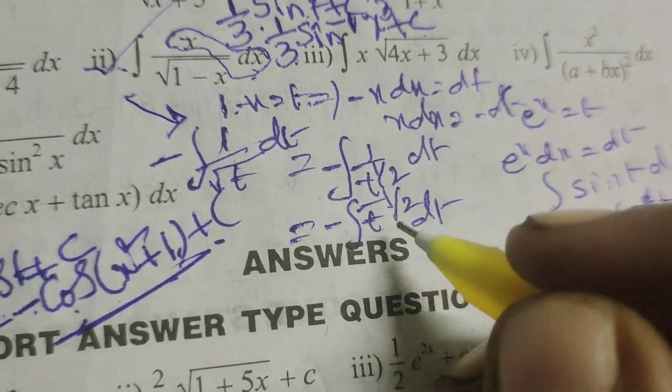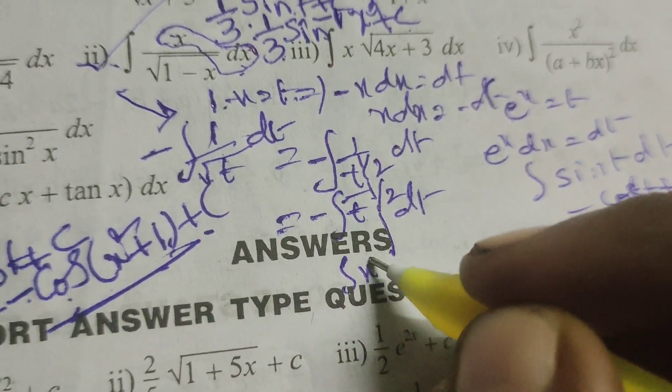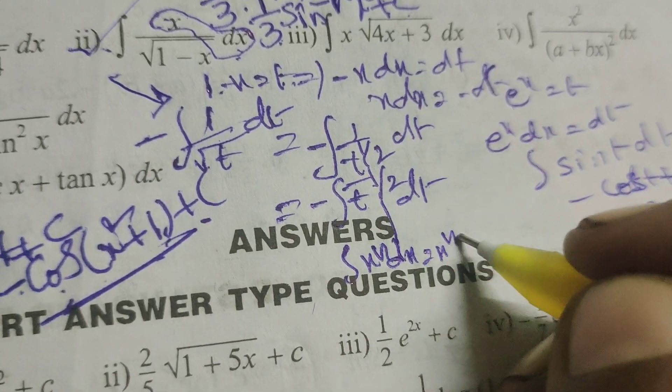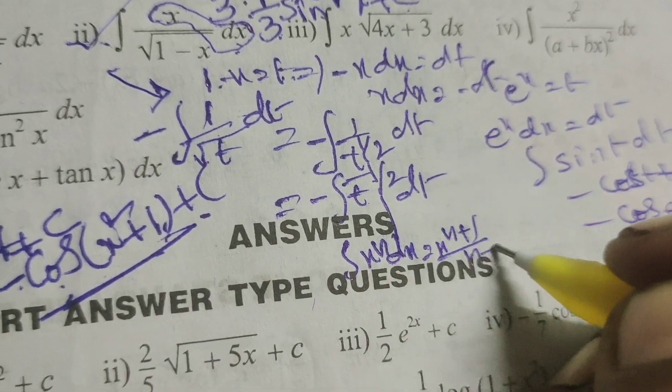Now integrate this according to this formula: integral of x power n dx, that is x power n plus 1 by n plus 1 plus c.